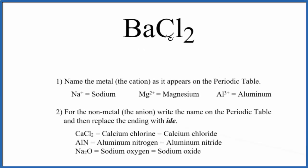To write the name for BaCl2, we first need to recognize that we have an ionic compound here. That's because we have a metal bonded to non-metals. So we have a metal, non-metal, that's going to be ionic.